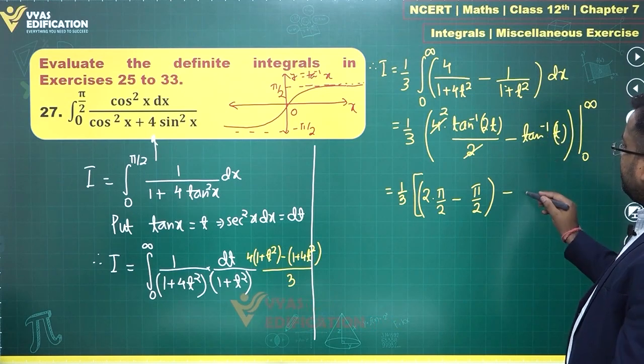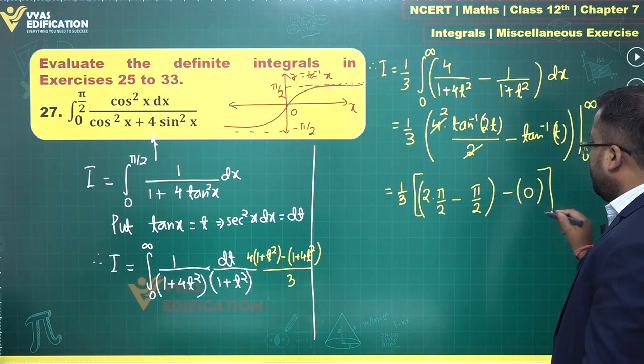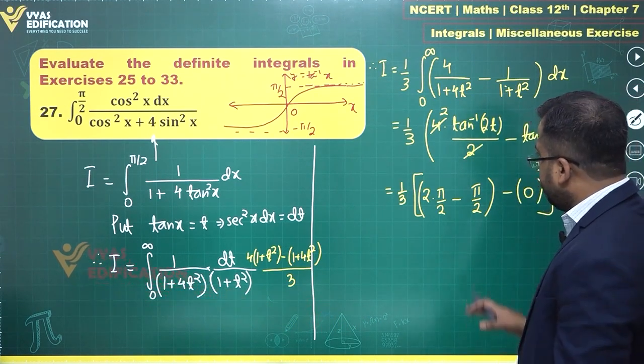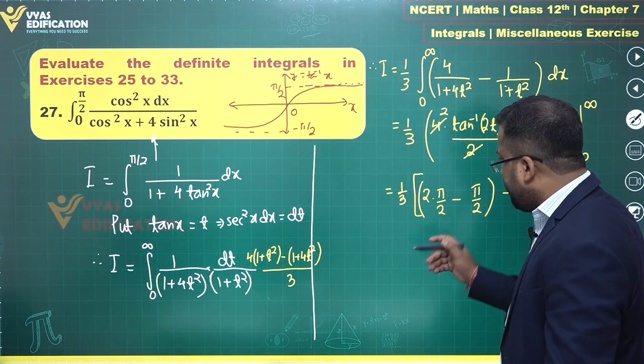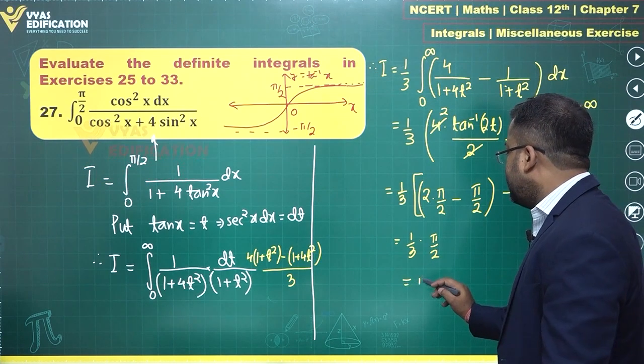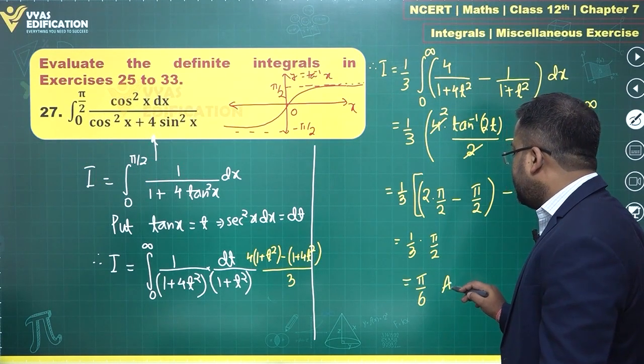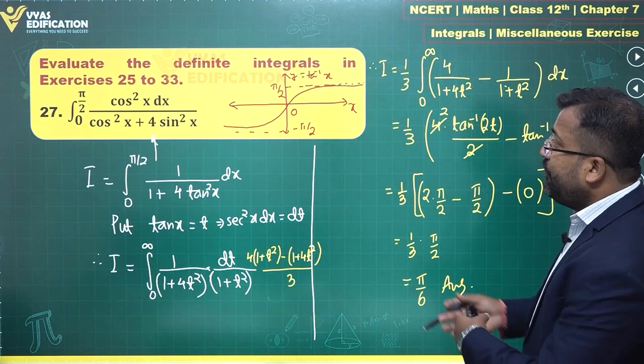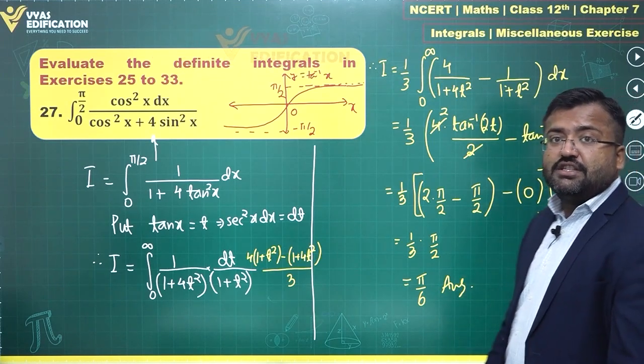So 2π/2 minus π/2 is simple π/2, and 1/3. Will be π/6. That is my required answer for this 27th question, as you can see over here.